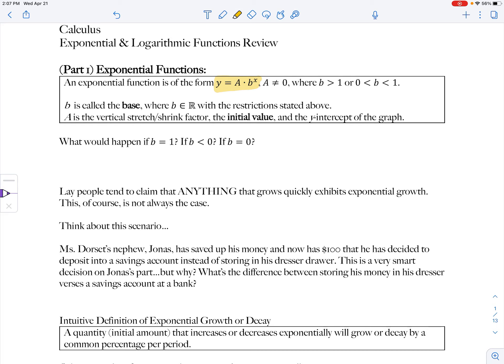So a can also be thought of as the vertical stretch or shrink factor, but it can also be thought of as the initial value because when we're talking about exponential growth or decay, when x is equal to zero, that would be b raised to the zeroth power, which any real number with the restrictions raised to the zeroth power will just be one, and then one times whatever a is, is a. So we think of a as being the initial value. It also ends up being the y-intercept to the graph.